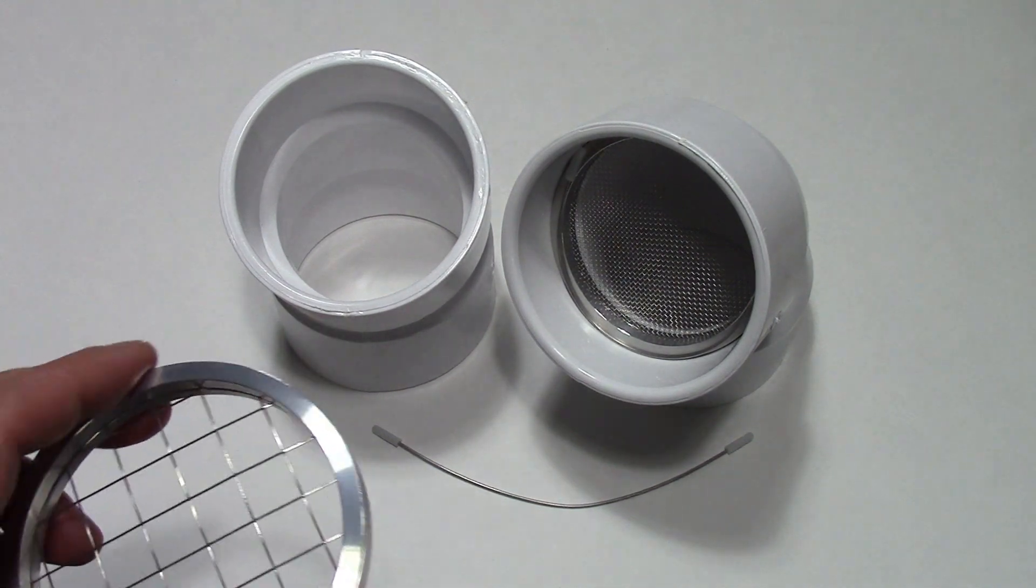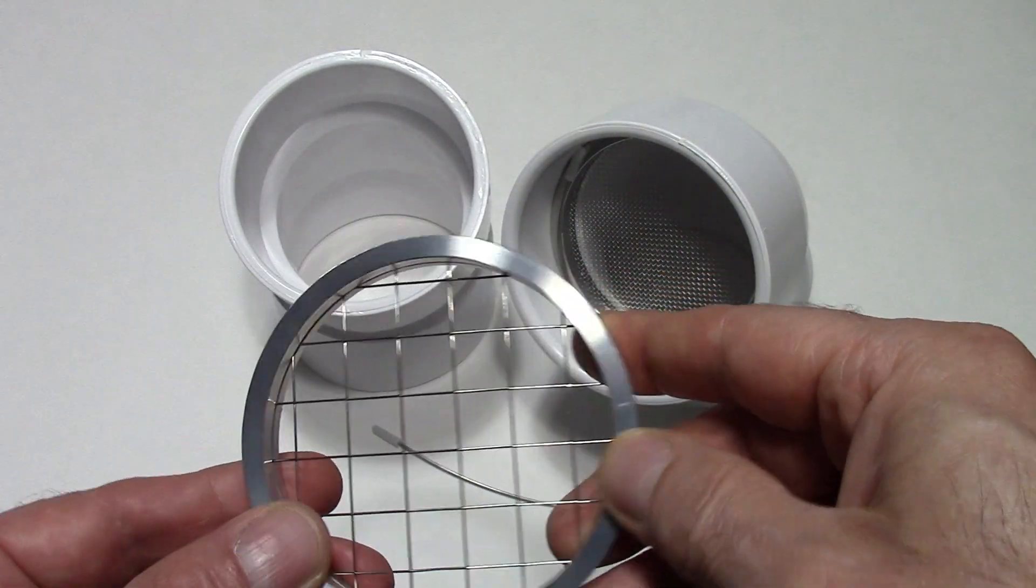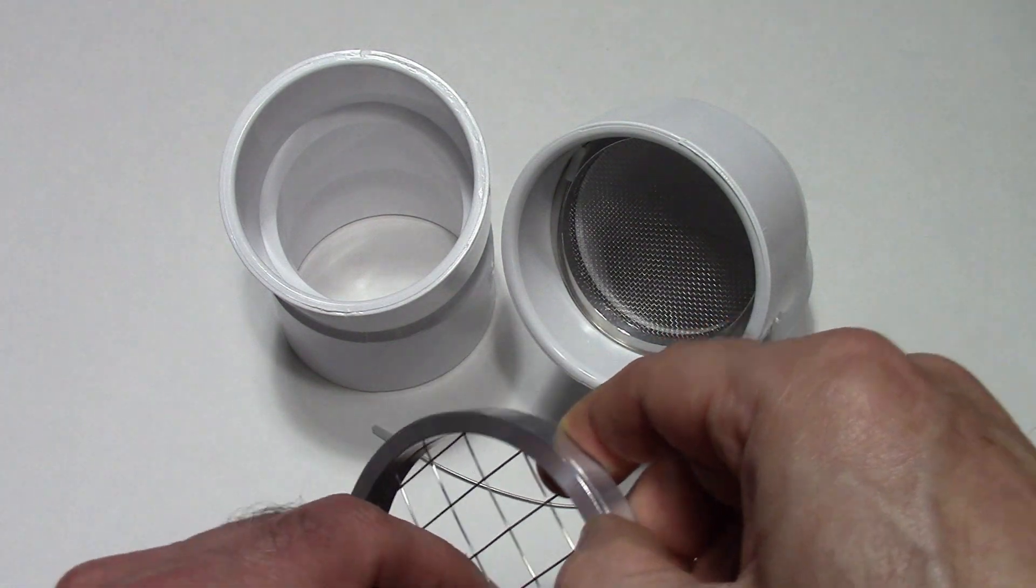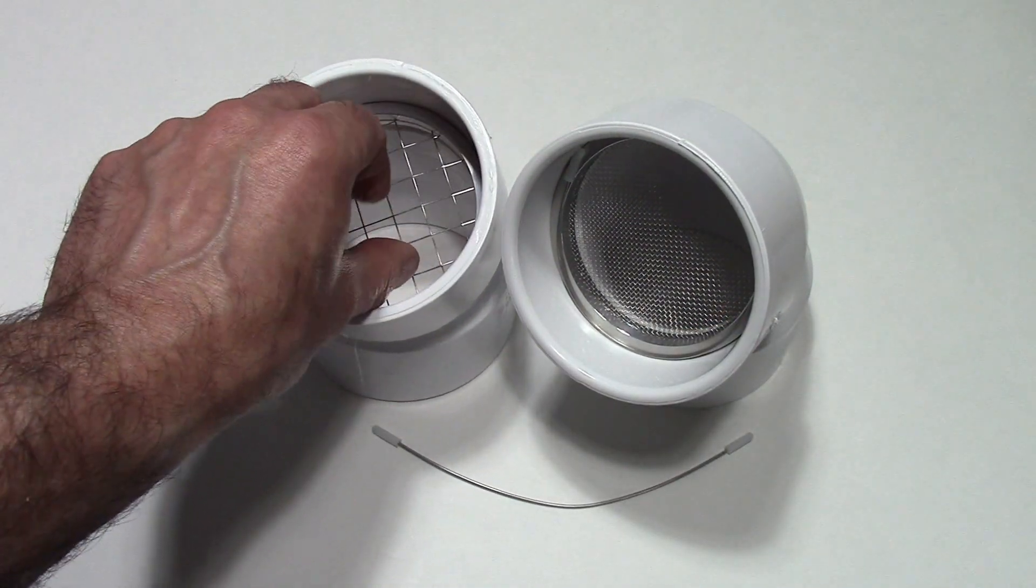Then take the vent screen. This is a PVS RS3 vent screen. You can take the vent screen and it slips right in there.